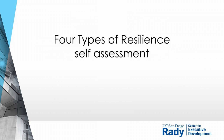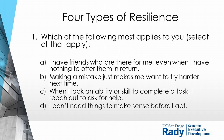Now we'll talk about four different specific types of resilience, starting with a self-assessment. I'll give you four questions, each with four possible responses labeled A, B, C, and D. Select all that apply to you. Question one: A — I have friends who are there for me even when I have nothing to offer them in return; B — making a mistake just makes me want to try harder next time; C — when I lack an ability to complete a task I reach out for help; D — I don't need things to make sense before I act.